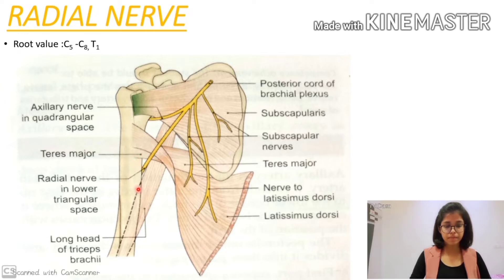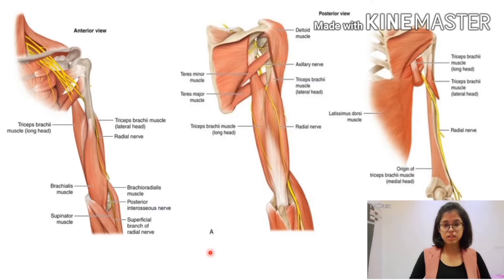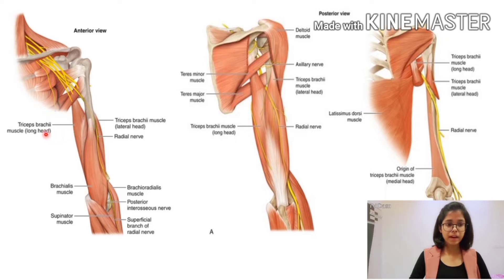The lower triangular space is formed by the long head of triceps brachii, teres major muscle, and the shaft of humerus. Leaving the lower triangular space, the nerve then enters the radial sulcus, where it lies between the lateral and medial heads of triceps brachii muscle, with the long head and the lateral head of triceps brachii forming the roof of the radial sulcus.